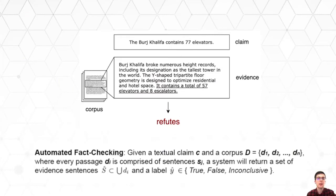In this work, we tackle the problem of automated fact-checking. The task is defined as follows: given an actual claim and a corpus, a system must retrieve a set of relevant evidence sentences and assign a label — true, false, or inconclusive — depending on the determined truthfulness of the claim.